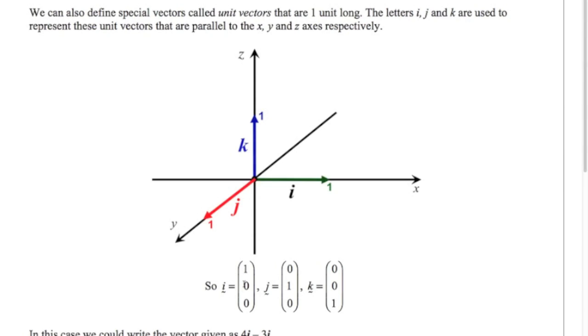So in three dimensions, i is just 1, 0, 0. So one unit along the x, 0 along y, and 0 along z. So the vector we had from the previous page was just 4i minus 3j. Four units along the x axis. And then minus three units along the y axis.